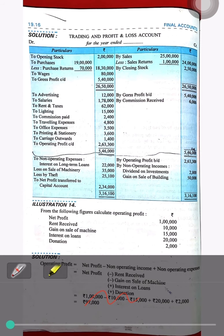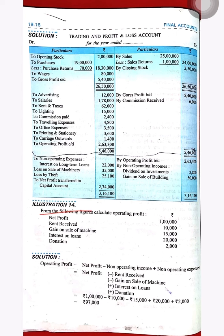Now let's look at Illustration 14 of the P&L section. The net profit is 1,00,000. Other details: rent received 10,000; gain on sale of machine 15,000; interest on loan 20,000; donation 2,000. We have to find the operating profit, which means we need to reverse the calculation.